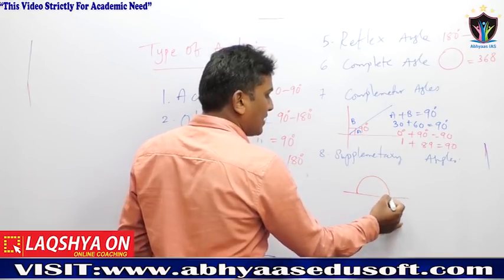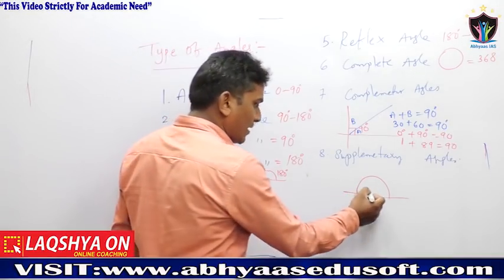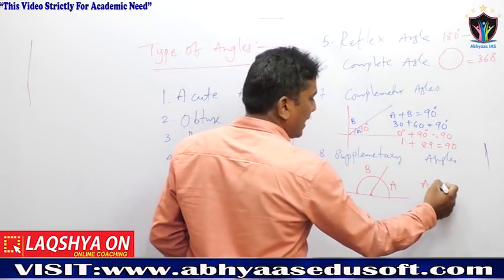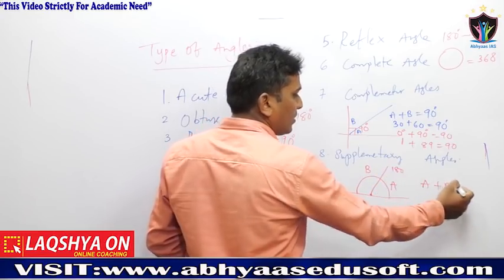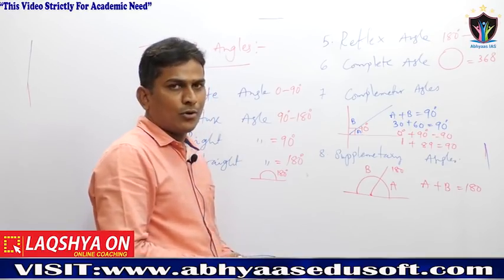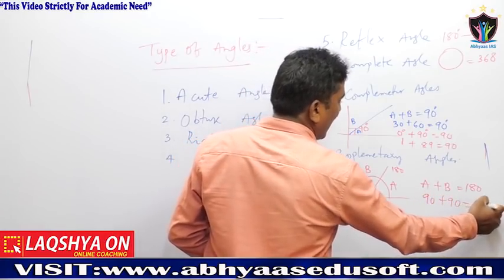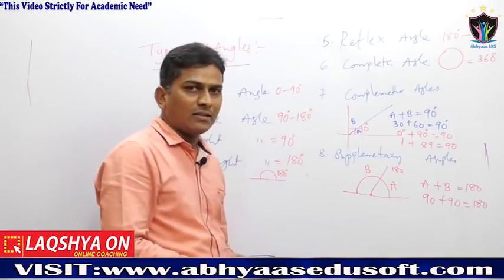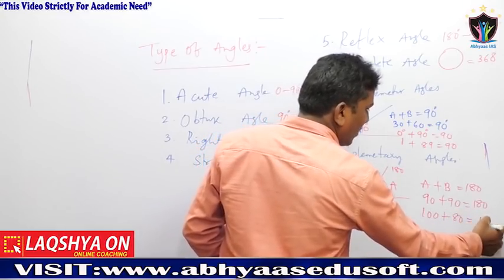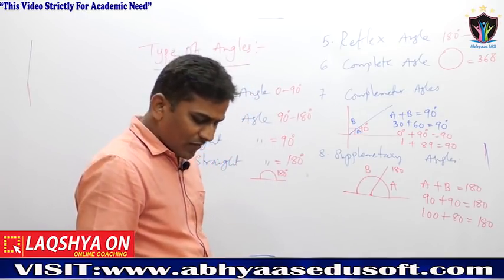For supplementary angles: on a straight line the total angle is 180 degrees. If we have angle A and angle B on a straight line, then A plus B equals 180. So A is supplementary to B and B is supplementary to A. For example, if A is 90 then B is 90; if A is 100 then B is 80.